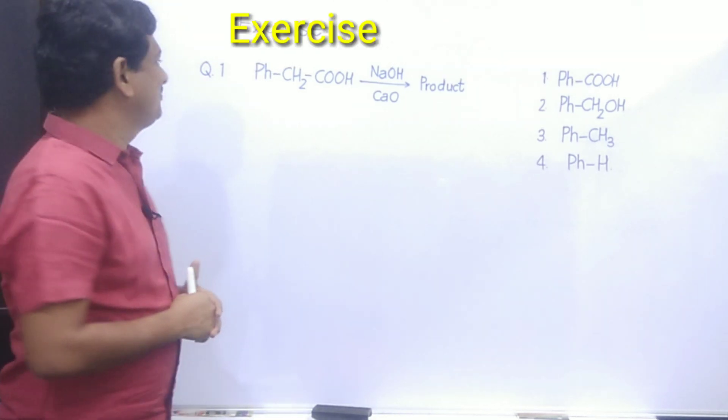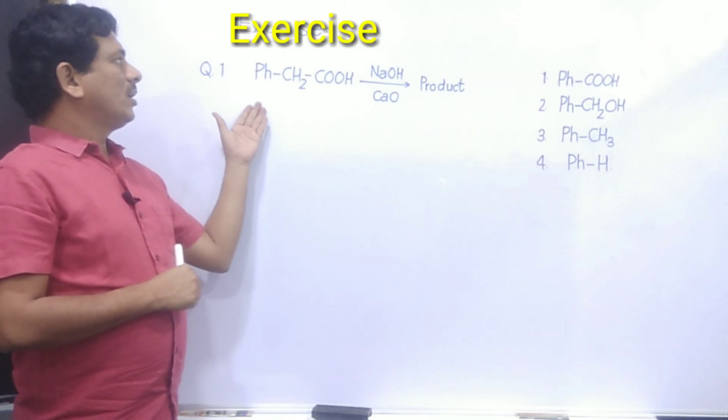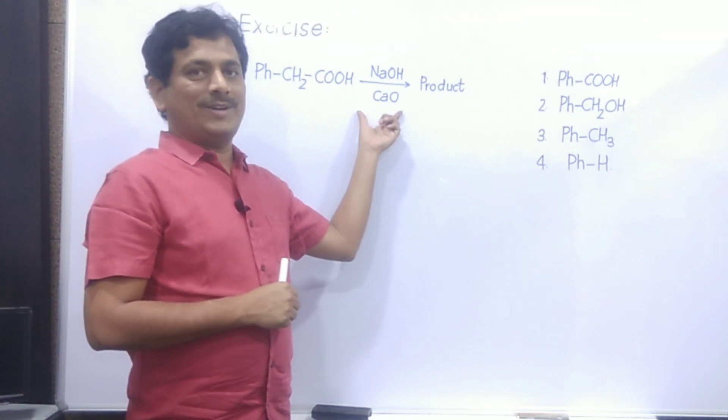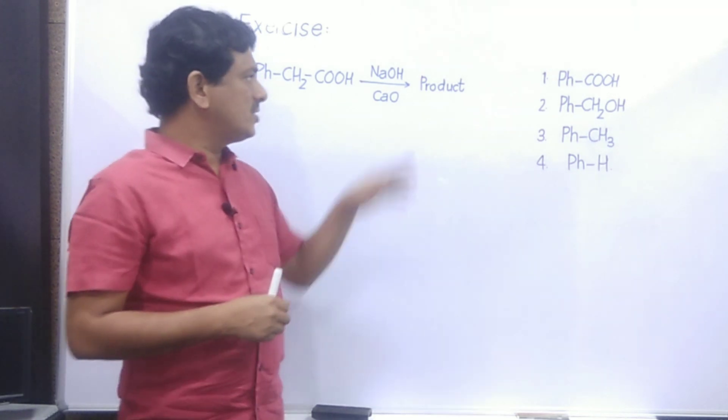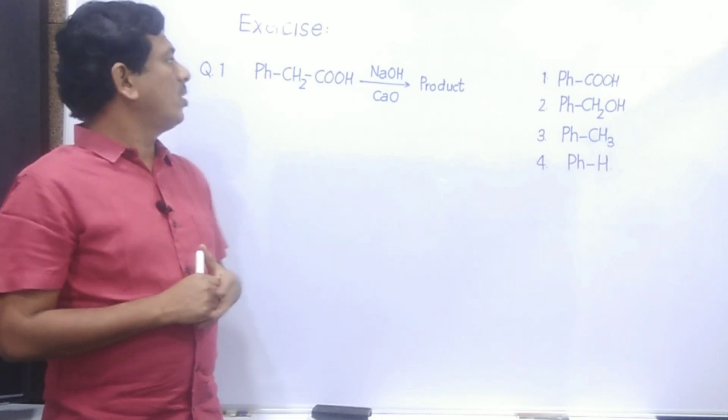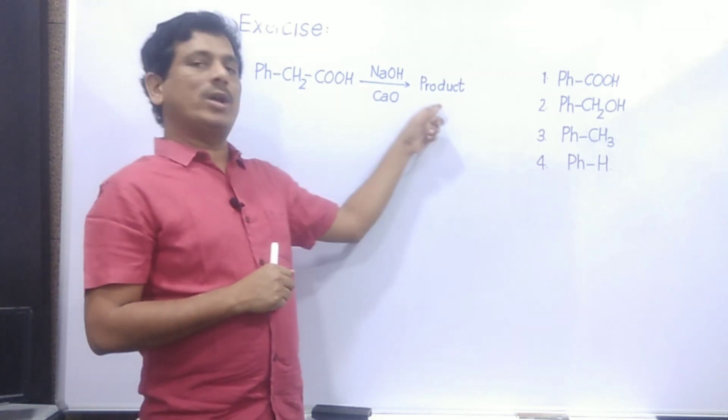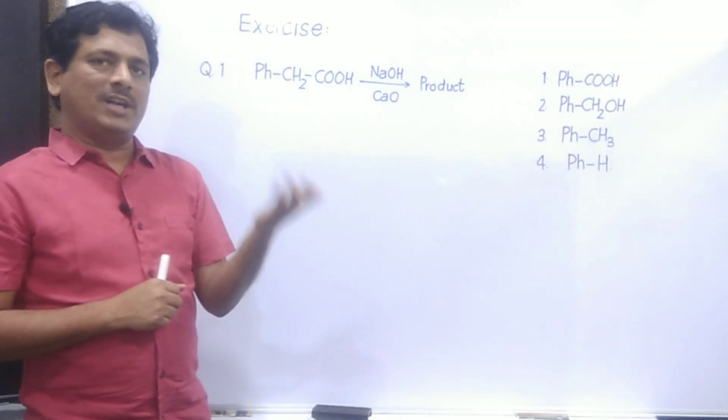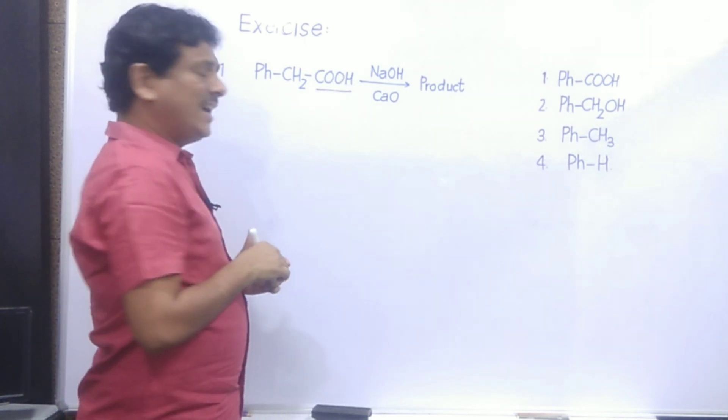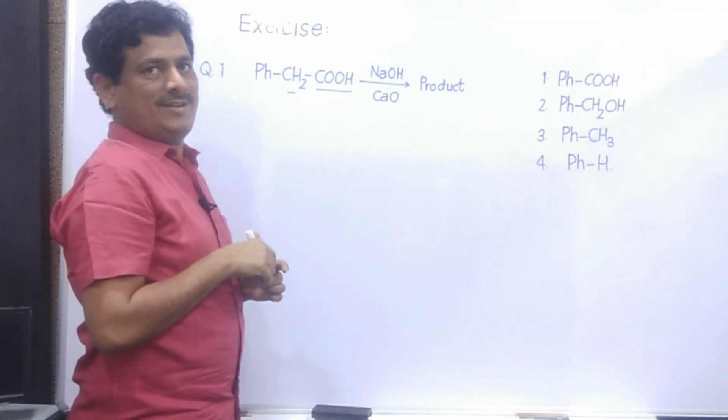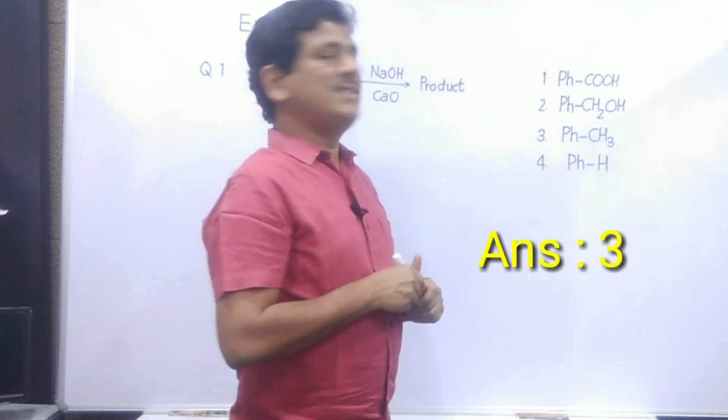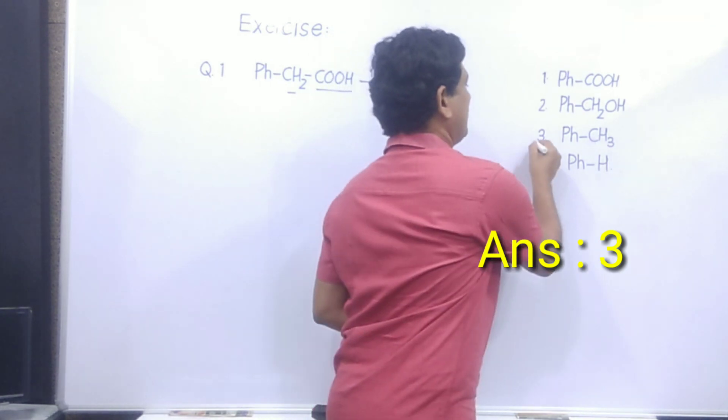Now let us see one question here. The given compound is to be treated with soda lime, and whatever product is formed, we are asked what is that product. Now in this reaction we have seen, whatever carboxylic acid we take, the product is obtained with one carbon less. That means simply I have to remove this part and I should give H to this carbon. Now you can see the options. So the answer of this question is option 3.